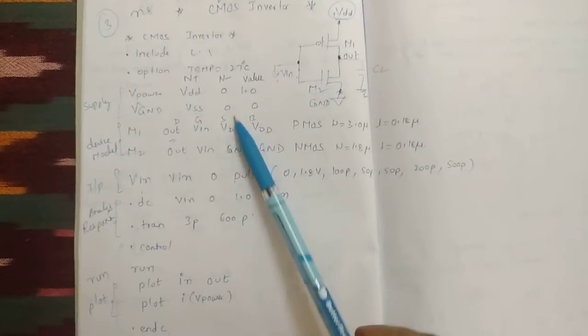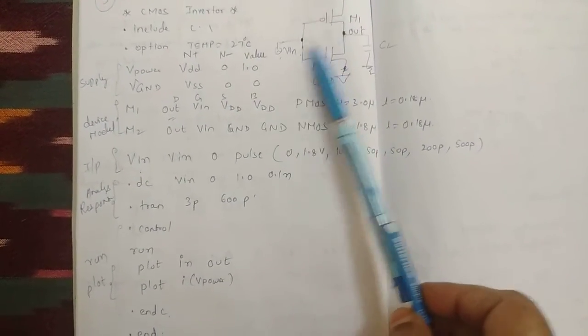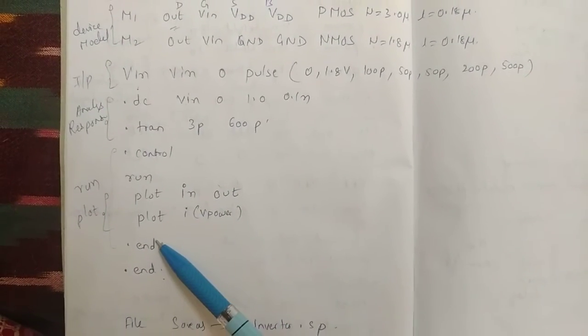Then plot what you want to plot: input and output. So plot VIN and VIN.